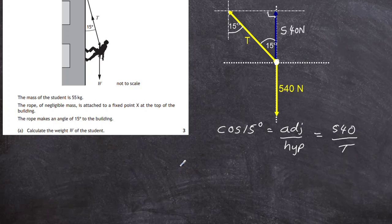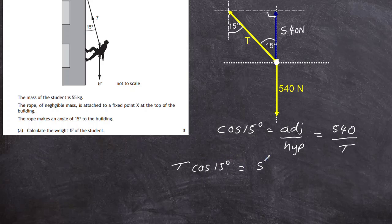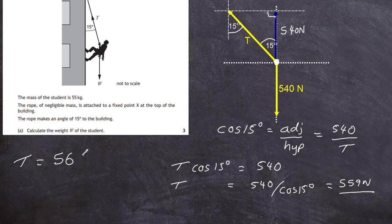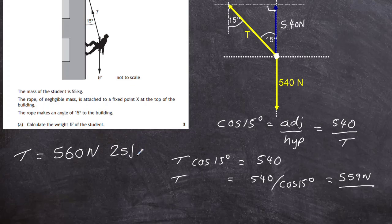So if we cross multiply, we have got T cos of 15 degrees is going to equal to 540. Therefore we divide by cos of 15 degrees, and we've got the tension T of the rope is 540 divided by cos of 15 degrees. And if we do that in our calculator, we get an answer of 559 newtons. So now we've found the tension in the rope to be 559 newtons. We can keep the two significant figures and say that the tension in the rope is equal to 560 newtons to two significant figures. So that's how we find the tension in the rope. Key point, draw the diagram out and look for the triangles.